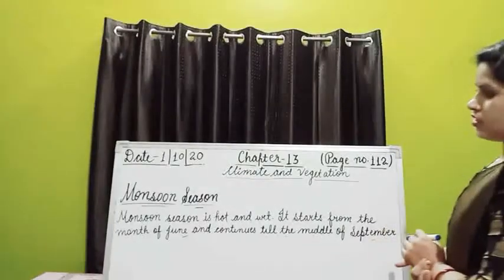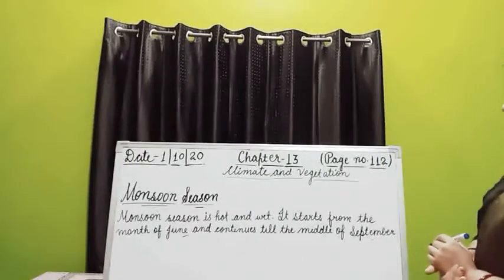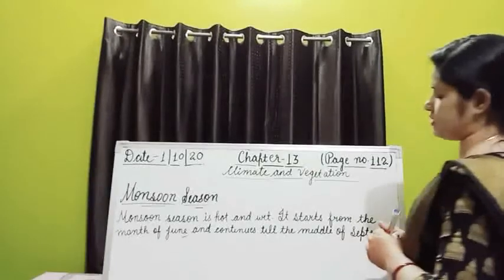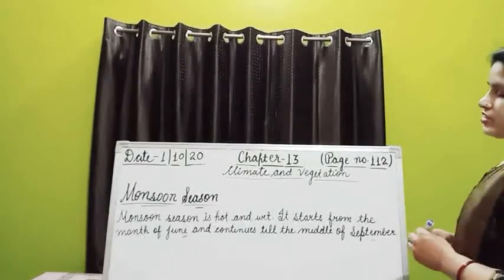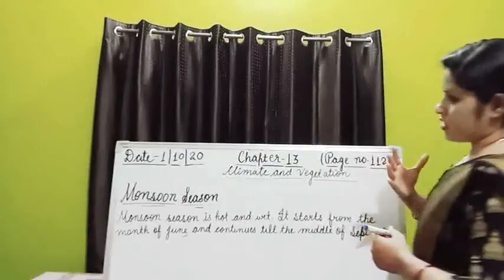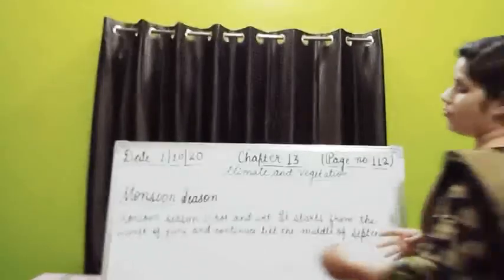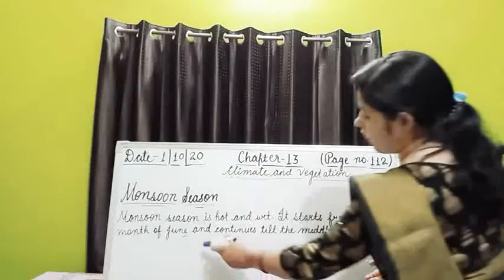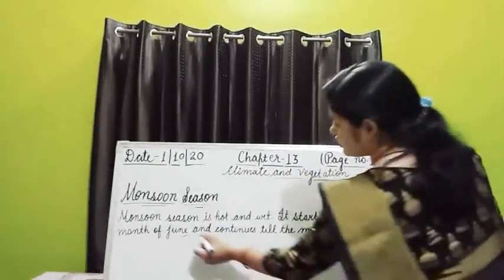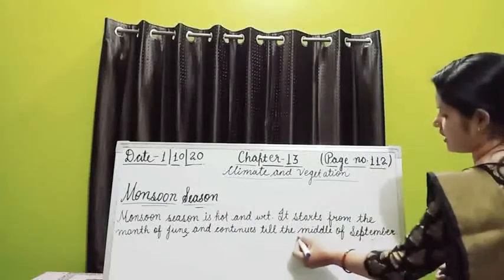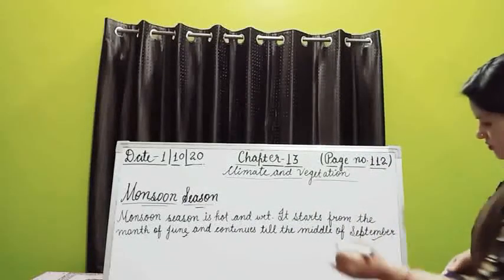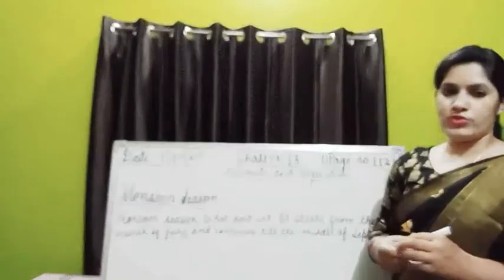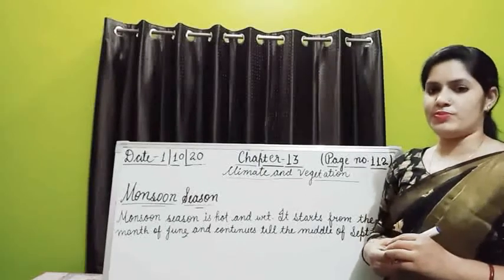In the previous video, we learned about summer season. Monsoon season comes just after summer season and it gives people a sense of relief as they get showers. Monsoon season is hot and wet. It starts from the month of June and continues till the middle of September. Now we will know about the main features of the monsoon season and what people prefer to do in this season.